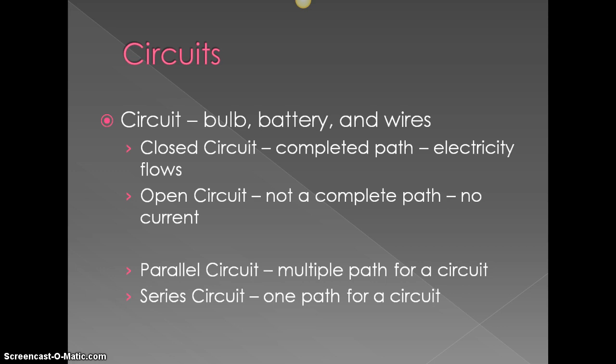An open circuit does not have a complete path, so there's no current running at that time. A parallel circuit has multiple paths for a circuit, so if one light bulb goes out, the entire system is still working, it's just that light bulb is burnt out.